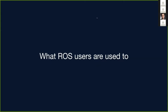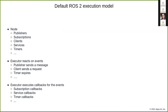So what are the ROS users used to? William already mentioned it. You have nodes, nodes have publishers, subscriptions, clients, services, timers, and then you have an executor that reacts on events like the publisher sends a message, a client sends a request, a timer expires, and the executor then executes callbacks related to these events. This could be done as subscription callbacks, service callbacks, timer callbacks.